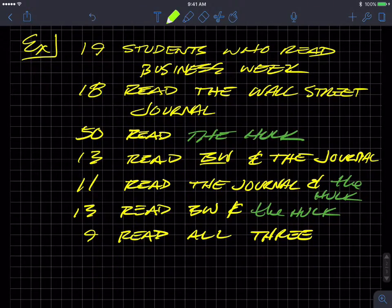So here's an example in how to set up a Venn diagram. So for instance, in this scenario, we have students and the magazines that we read or that you read. And of course, I know all of you read these. I've changed one of them. Let's see if you can figure out which one was changed. So 19 students read Business Week. 18 students read The Wall Street Journal. 50 read The Hulk. 13 read Business Week and The Journal. 11 read The Wall Street Journal and The Hulk. 13 read Business Week and The Hulk.